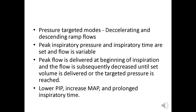In pressure-targeted mode, there is a decelerating and descending ramp flow. The peak inspiratory pressure and inspiratory time are set, so the flow is variable. The peak flow is delivered at the beginning of inspiration and subsequently decreases until the set volume is delivered or the target pressure is reached. This results in a lower peak inspiratory pressure, increased mean airway pressure, and prolonged inspiratory time.